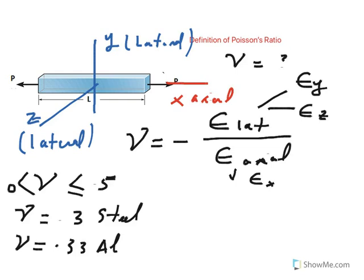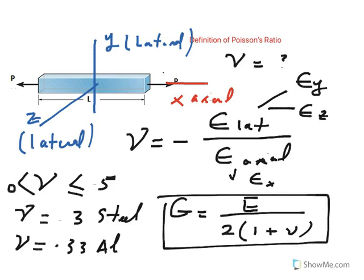One other relation is that the modulus of rigidity: if you have the modulus of elasticity E and you have the Poisson's ratio, this relation is valid: G is equal to E, which is modulus of elasticity, divided by 2 times 1 plus nu. Of course, G is shear modulus or modulus of rigidity, and E is modulus of elasticity.